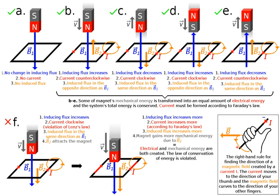if a change in the magnetic field of current I1 induces another electric current I2, the direction of I2 is opposite that of the change in I1.